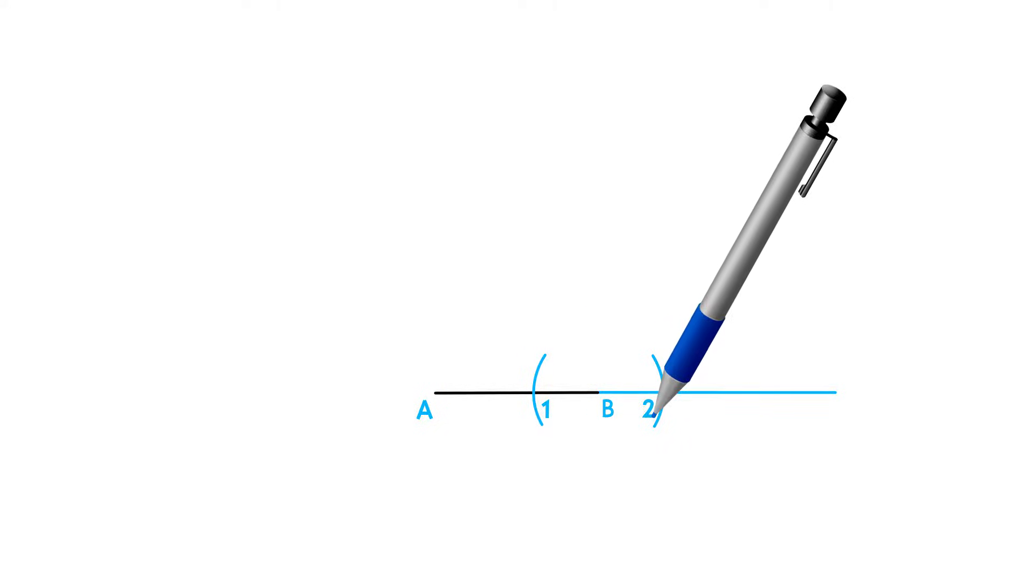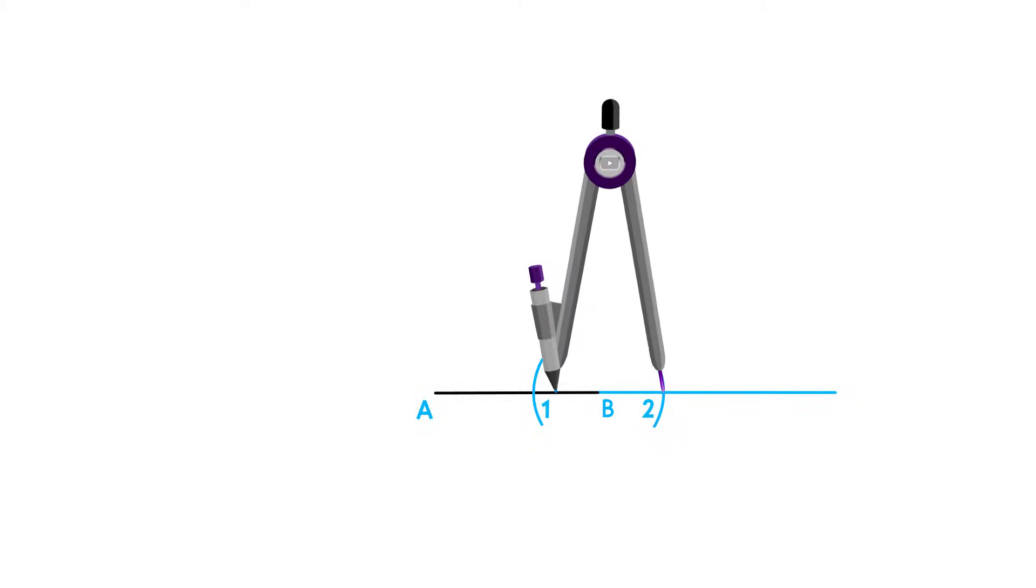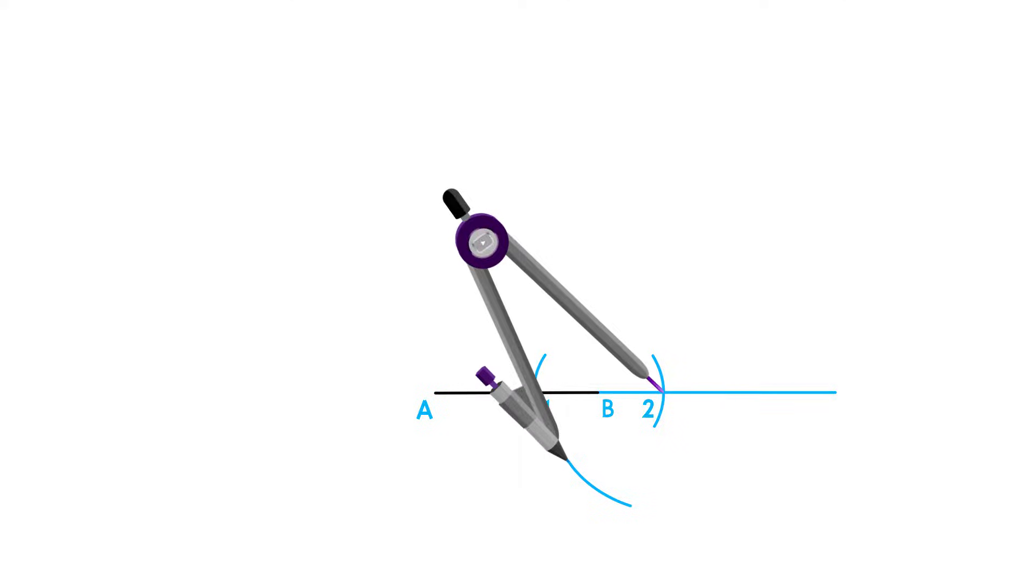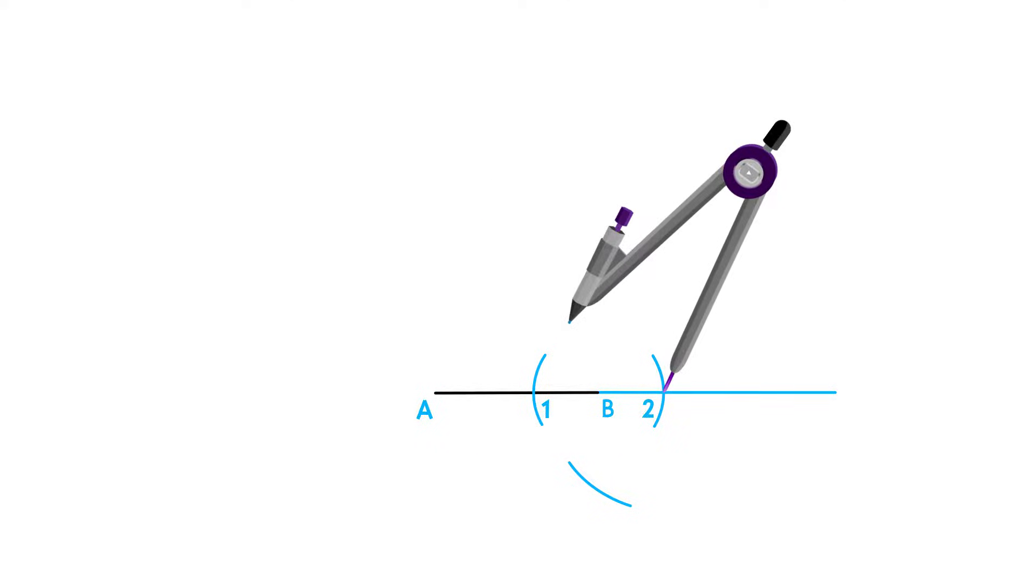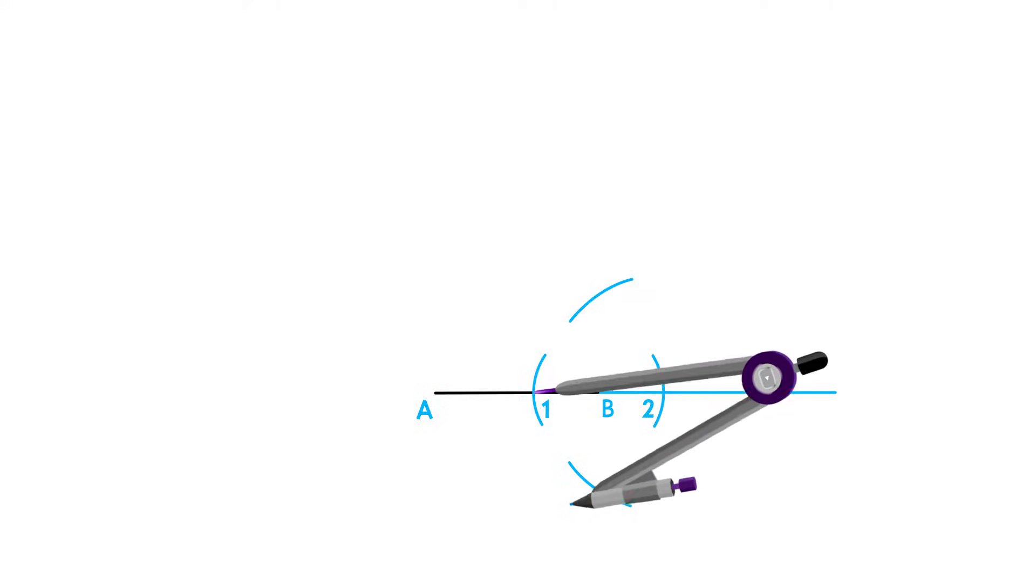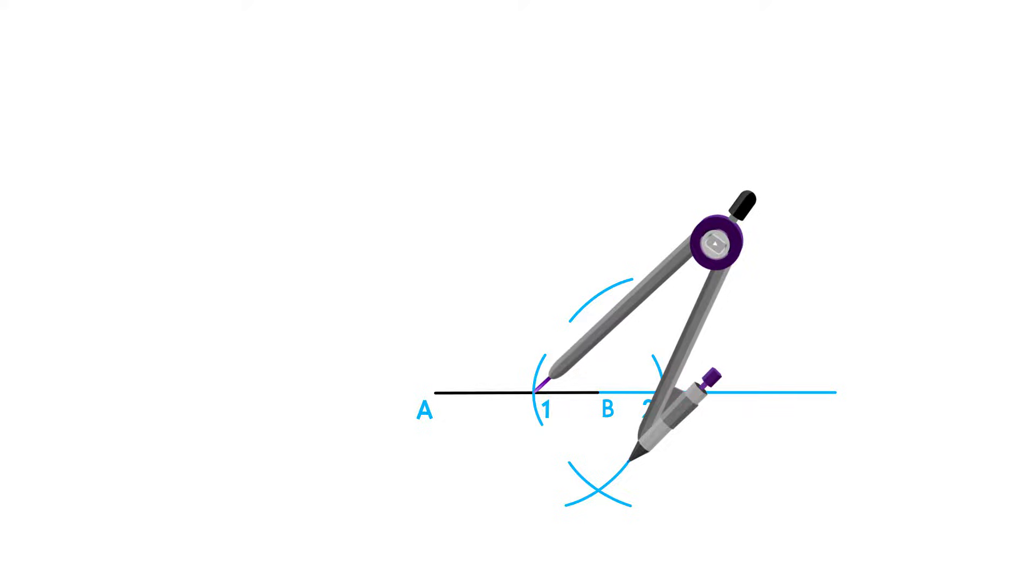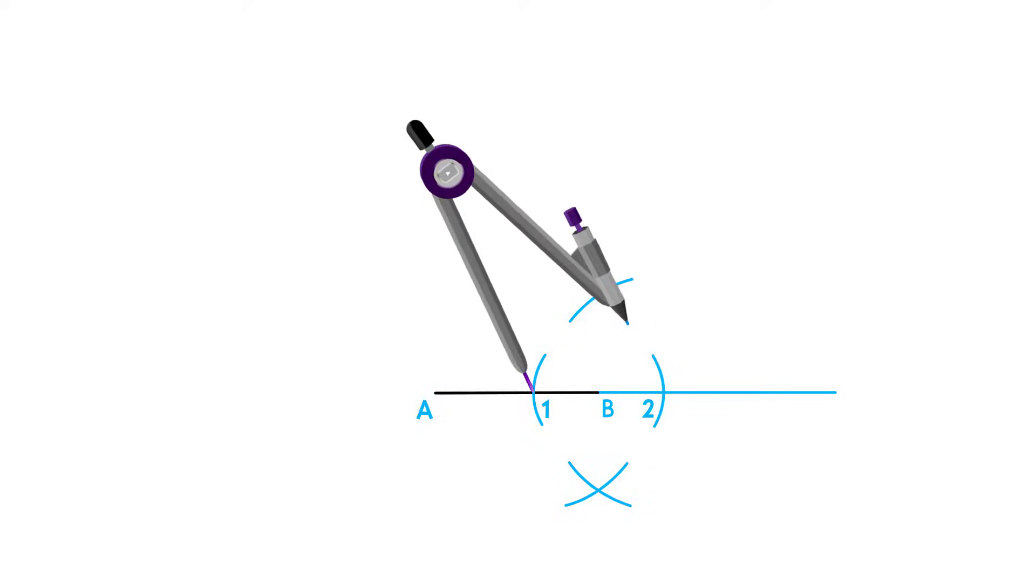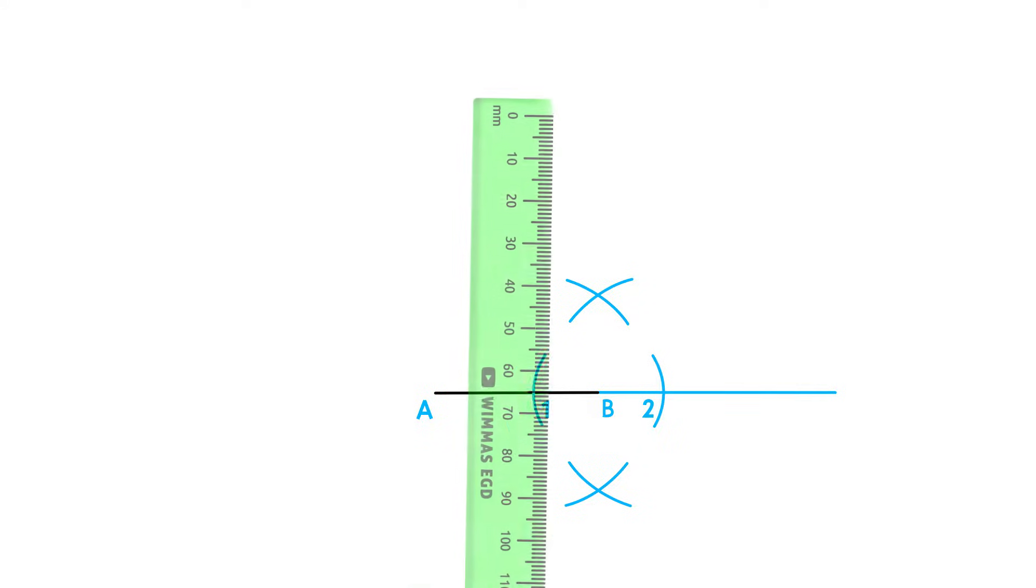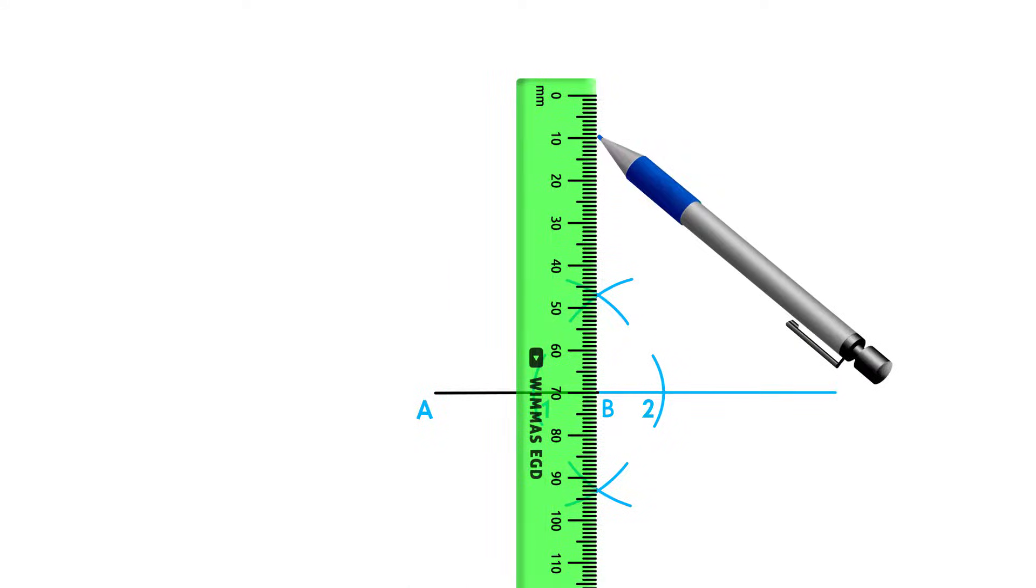We can then draw a perpendicular bisector between point 1 and 2. Place your compass on point 2 and adjust your compass to any measurement more than half the distance between point 1 and 2, and draw an arc above and below the line. Using the same measurement, do the same on point 1. Draw a line through these two intersecting points to complete the perpendicular bisector.